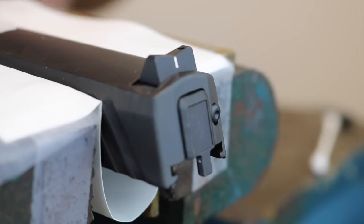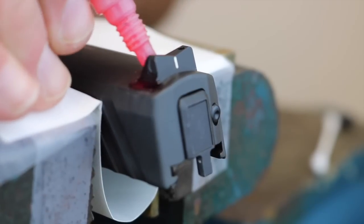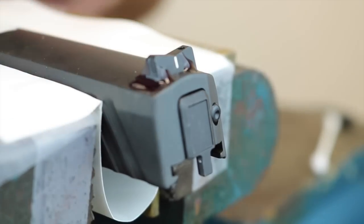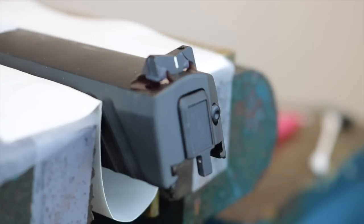Once we have the sight in place, set screws snugged, we're going to go in just like the front sight and apply the red thread locking compound. Drops down in the dovetail on each end of the sight as well as at the contact points at the top of the slide and the sight itself. Let that sit for a couple of minutes and we'll clean off what doesn't creep in.